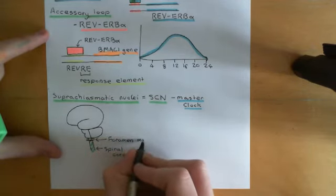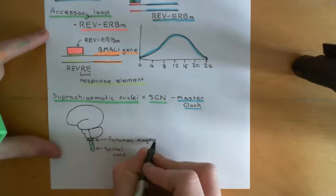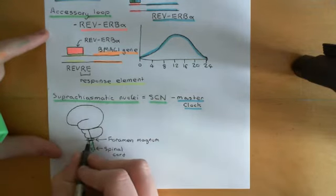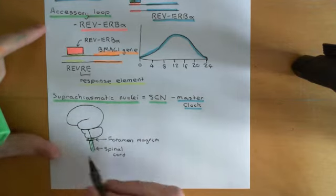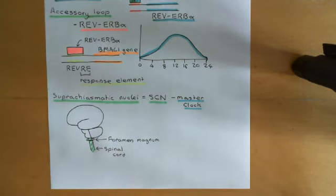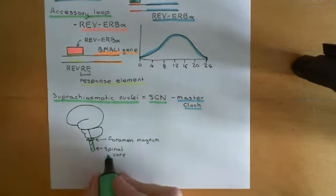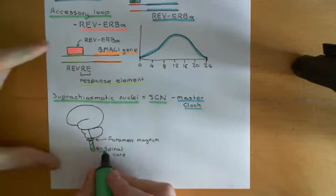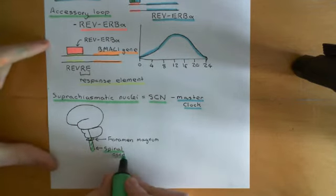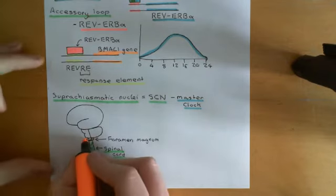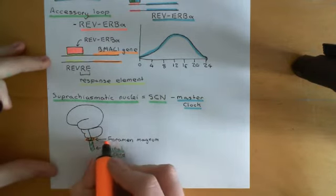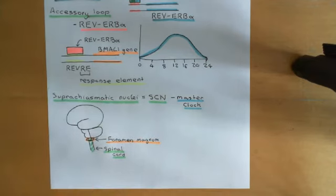The spinal cord, shown in green, is not in the skull — it is the continuation of the brain stem down into the vertebral column. The hole at the base of the skull through which the spinal cord passes upward to become the brain stem is called the foramen magnum, marked here in orange.